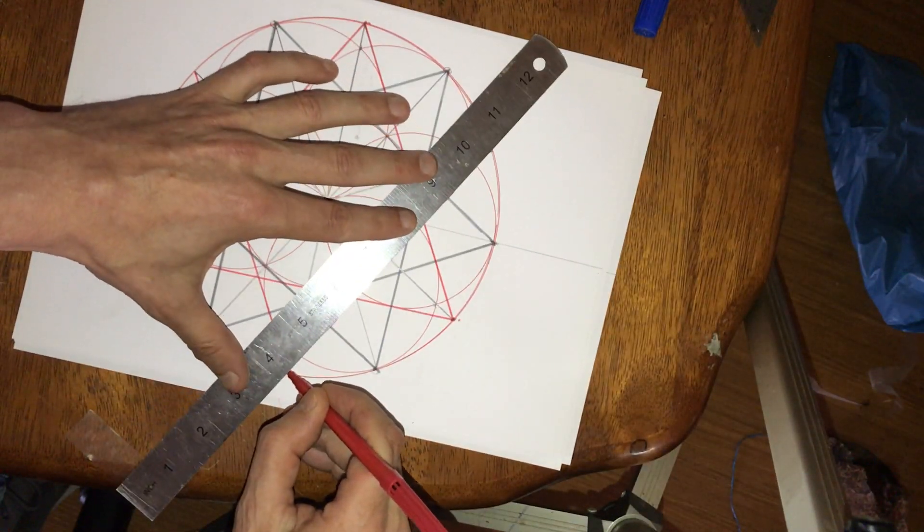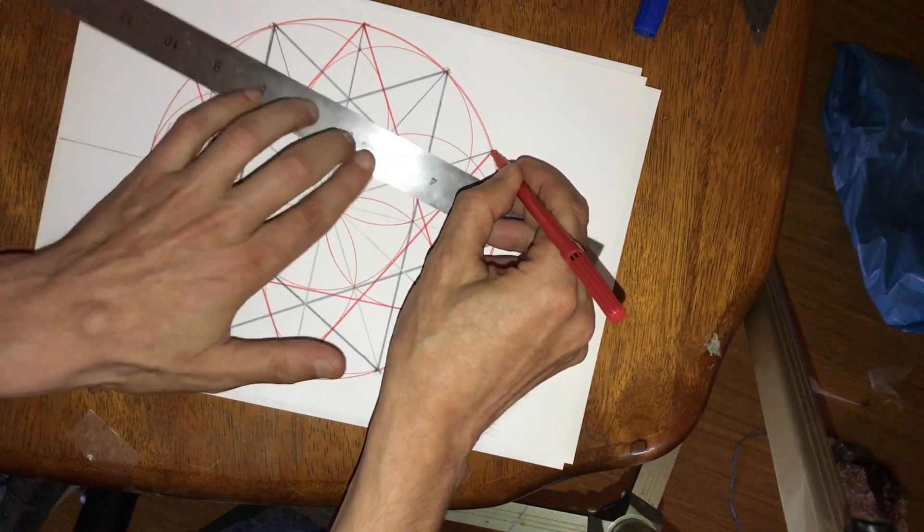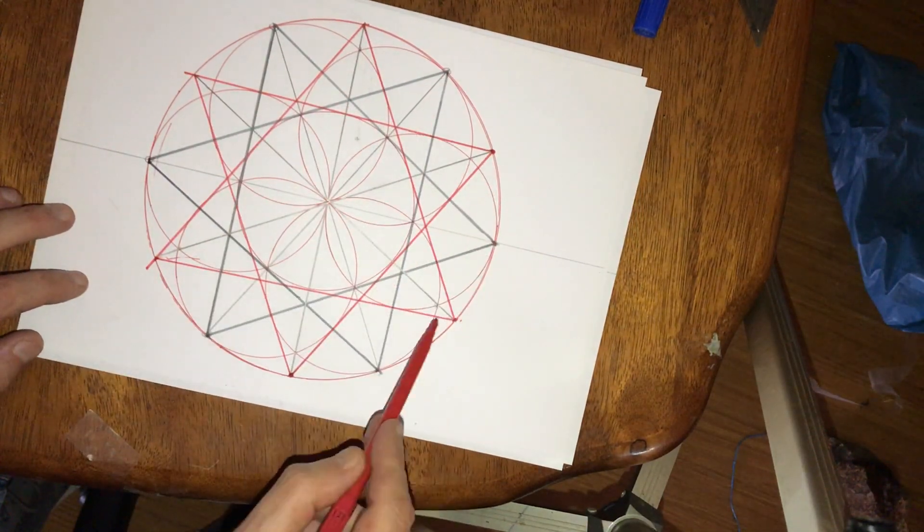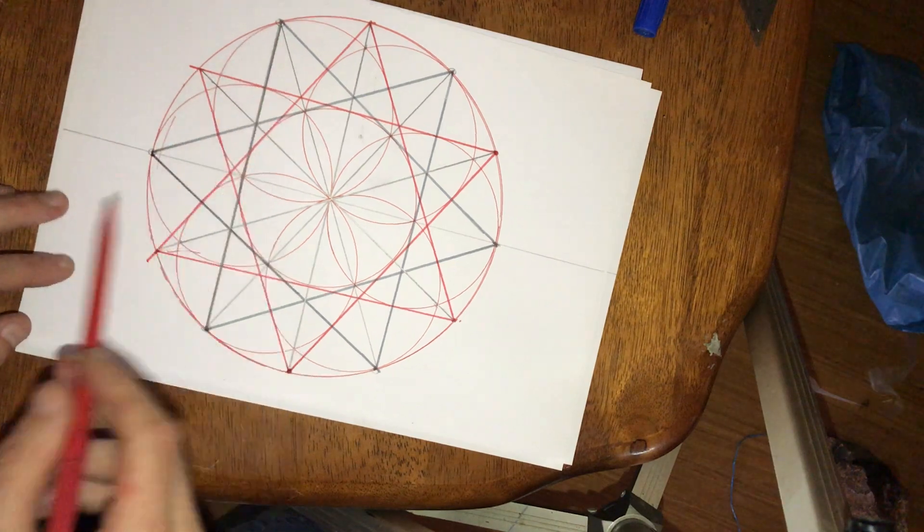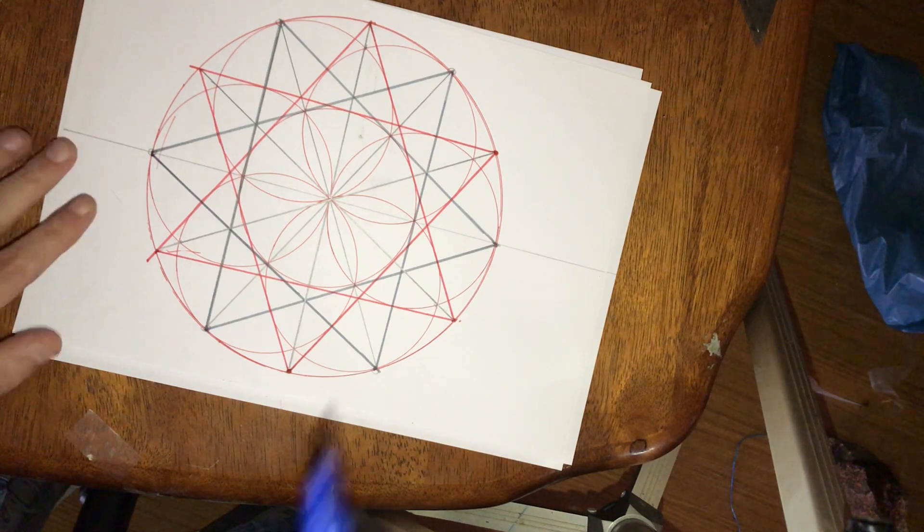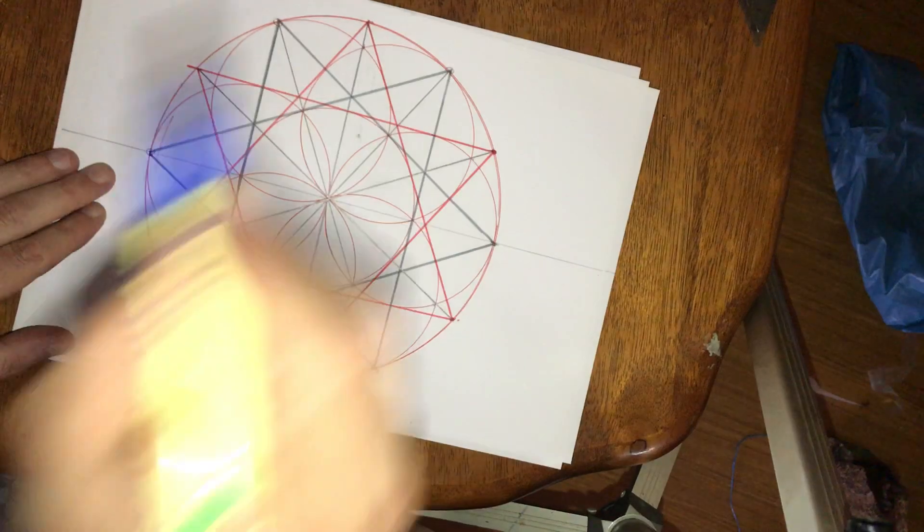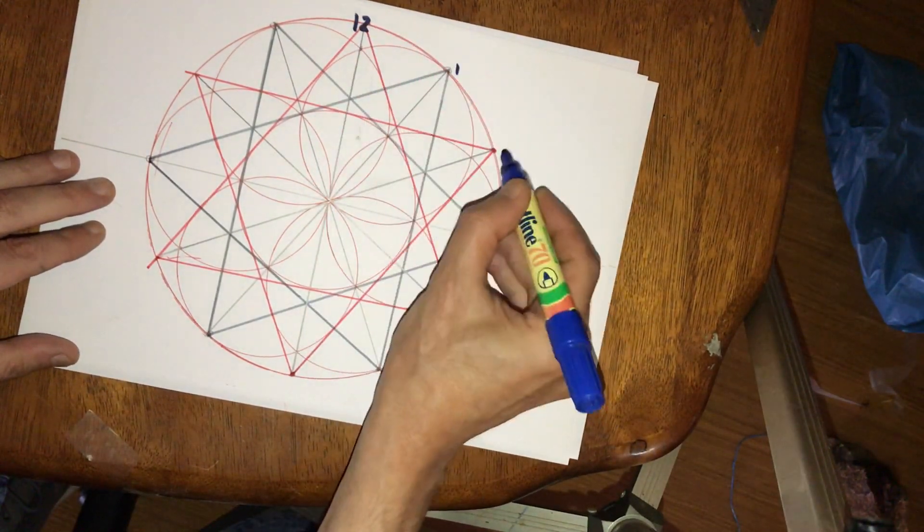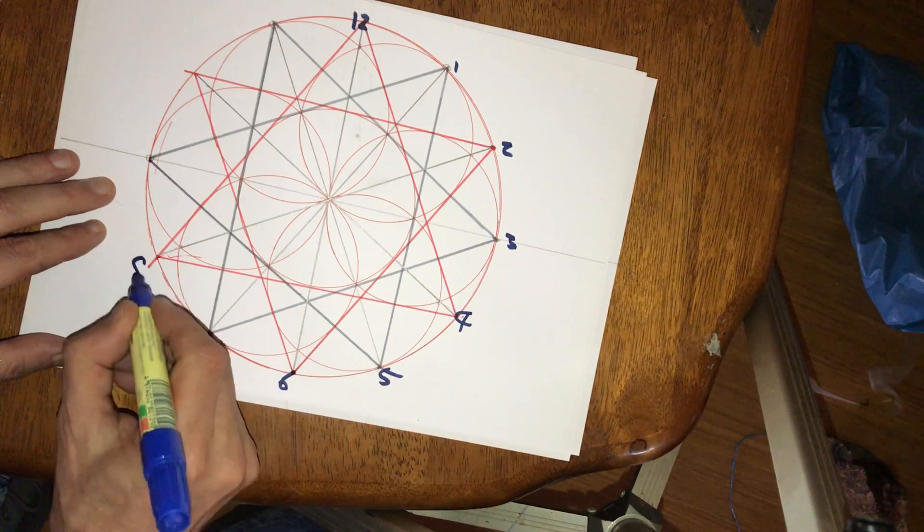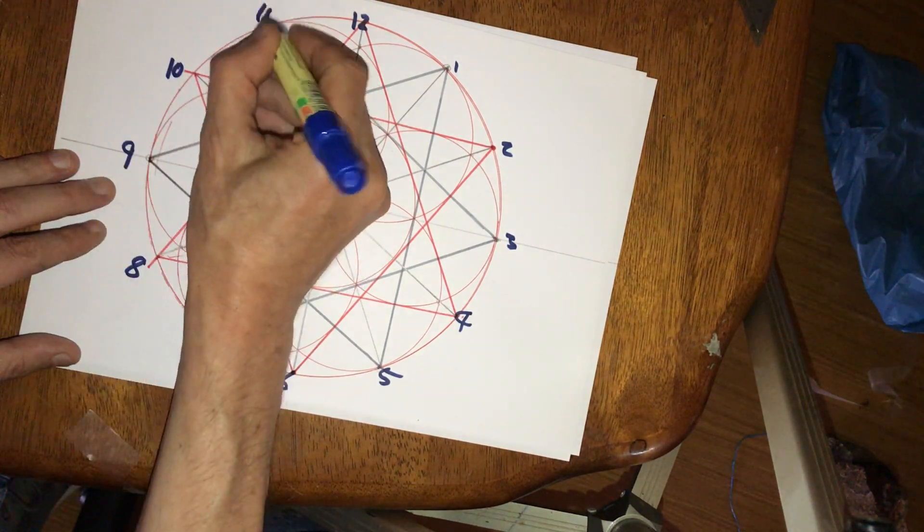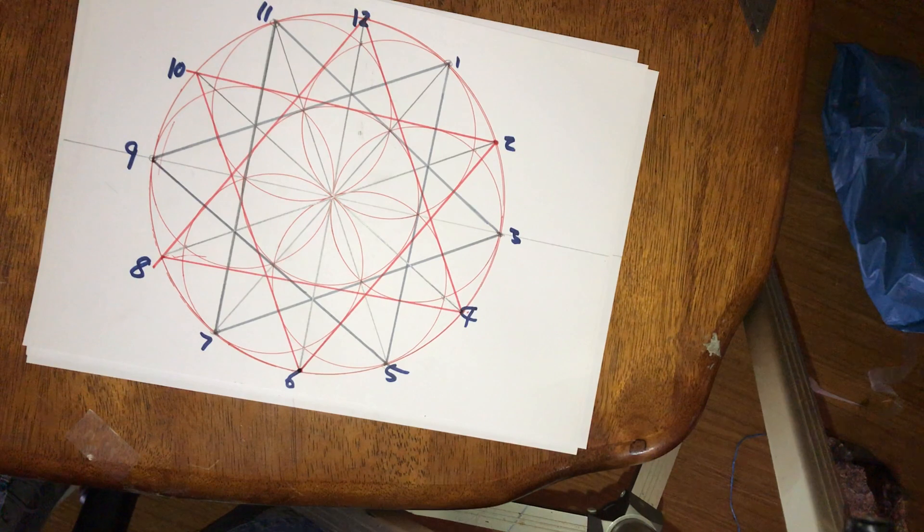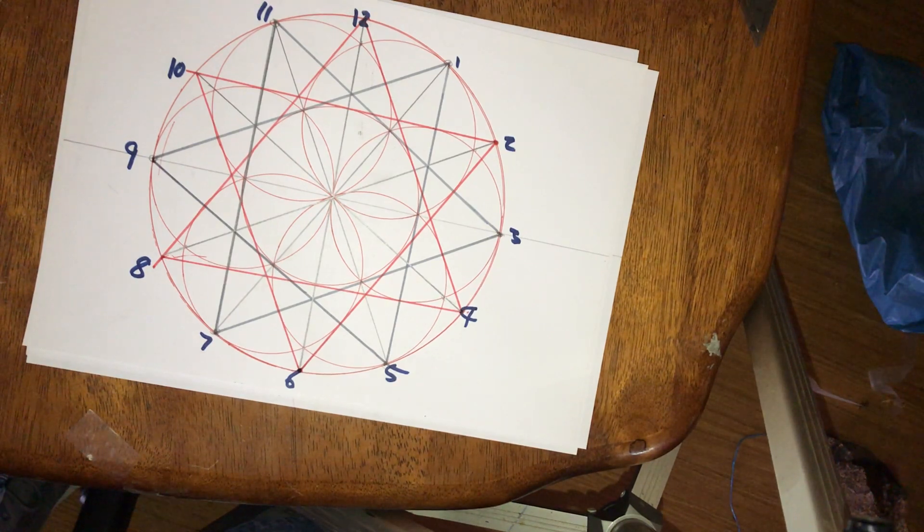We'll create a 12 pointed star once I'm finished. Now we have one, two, three, four, five, six, seven, eight, nine, ten, eleven, twelve. I'm just going to be very rough for a moment because you can be as artistic as you want. We have a 12 - one, two, three, four, five, six, seven, eight, nine, ten, eleven. So we have our clock face there. You can take your time and do different designs, design your own clock face.